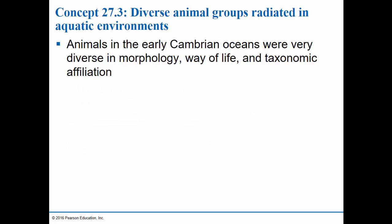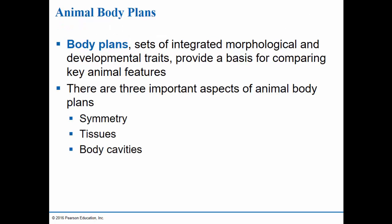Keep in mind that prior to the Cambrian Explosion, as well as during that time period, all animals as well as all plants lived in the oceans — this occurred before the invasion of land by either of these groups. During the Cambrian Explosion we see a lot more body plans than we had seen previously in the Ediacaran biota. Body plans are sets of morphological and developmental traits — what the organism looked like, what its features were, and developmental changes throughout an organism's lifetime.